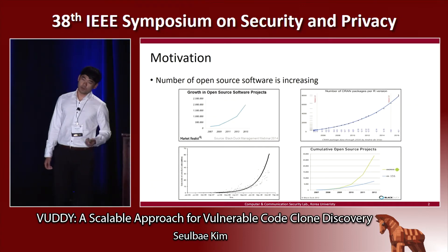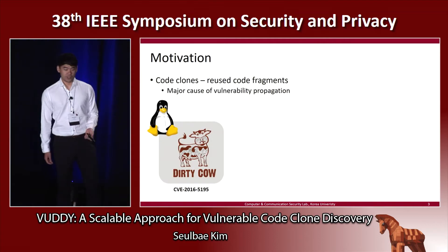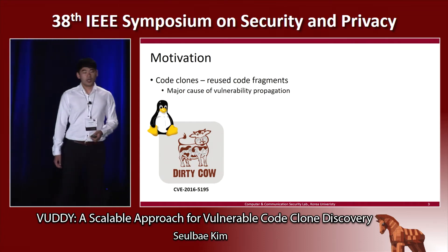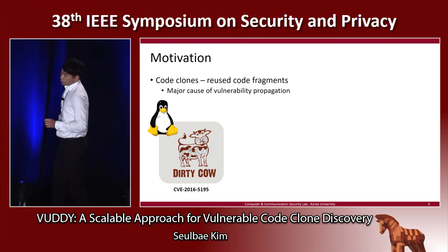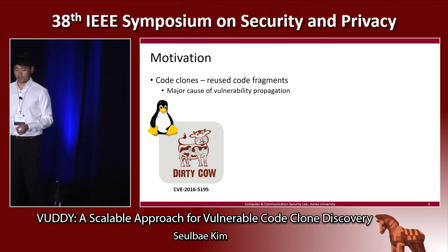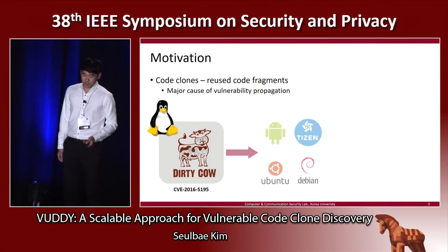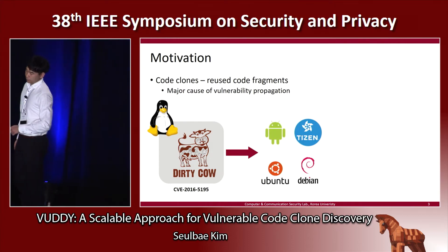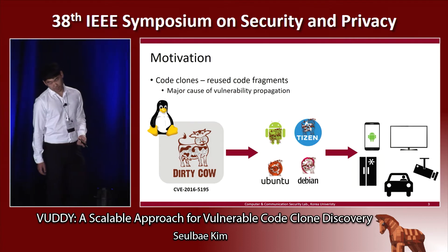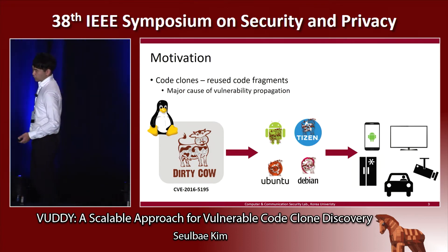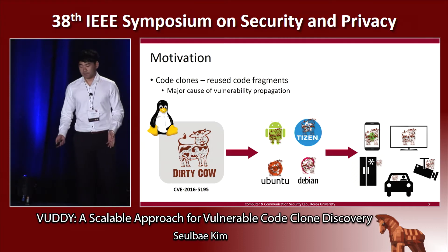Here's the motivation. The number of open source software is increasing worldwide, and many people claim that the growth rate is exponential. In this situation, the number of code clones — which are reused code fragments — are also proliferating. One point we're focusing on is that code clones are being one of the major causes of vulnerability propagation. For example, last year we had the Dirty Cow vulnerability discovered from the Linux kernel, and all the other operating systems that use kernels as their basis were affected by the same vulnerability. Also, the same vulnerability propagated to the devices that use these operating systems.